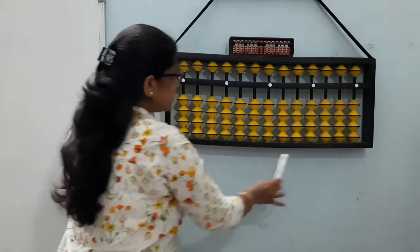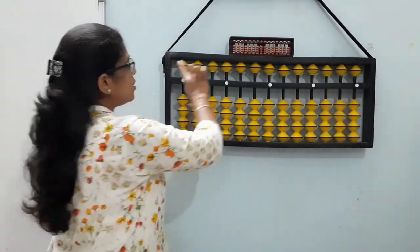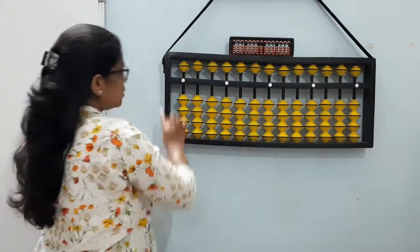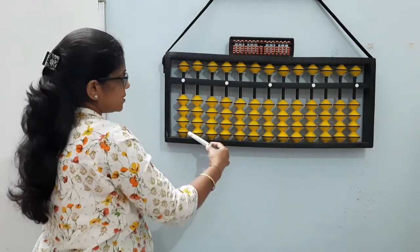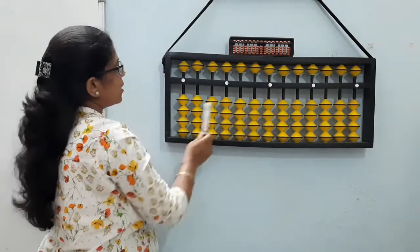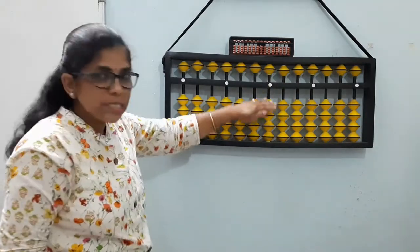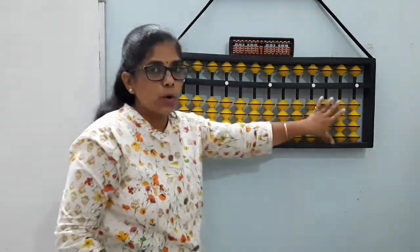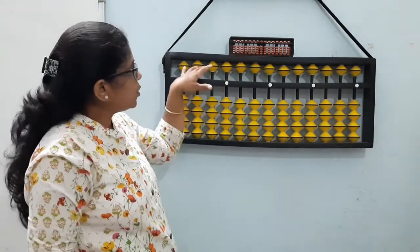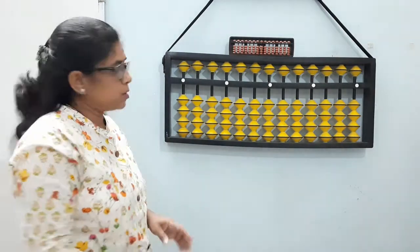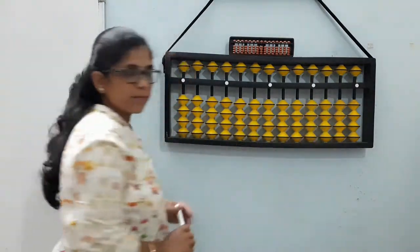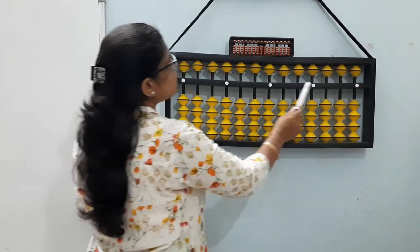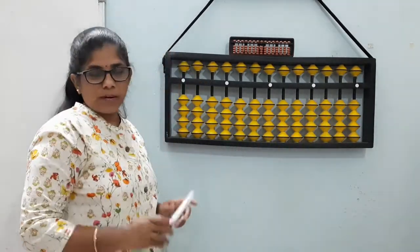So actually let us see what is abacus. This abacus, the beads are arranged here. You can see one rectangular frame. This frame is divided in two parts. This is lower part. This is the upper part. In lower part you can see four beads in each rod. And in upper part you can see only single bead in each rod. Apart from these beads and rods you can also see the white dots here. One, two, three, four, five. Five white dots you can see.